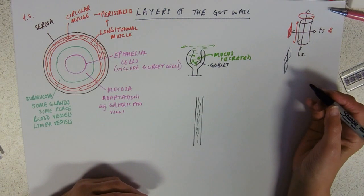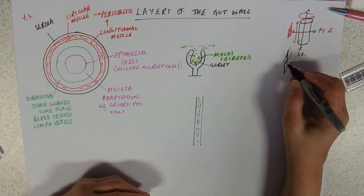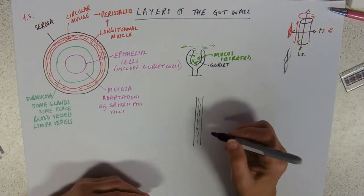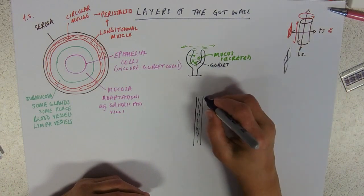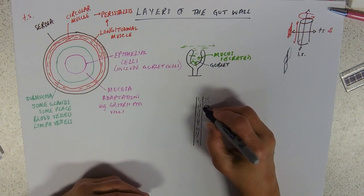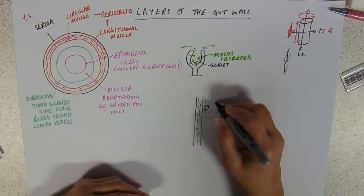Your circular muscle, which again is smooth muscle cells, in a longitudinal section has been cut across and that will look like dots. Sometimes you'll see them almost arranged in areas, so they'll look like dots, your circular muscle.